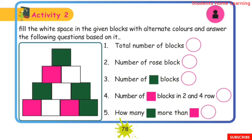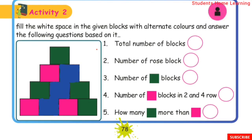First, look at the blocks with the colors filled in. First question: total number of blocks — the total is 10 blocks. Second question: number of rose blocks — there are 3 rose blocks.